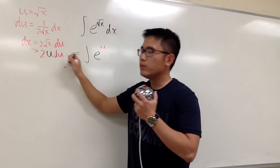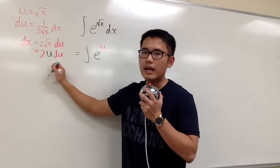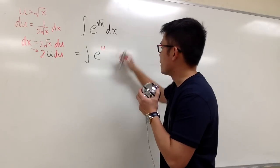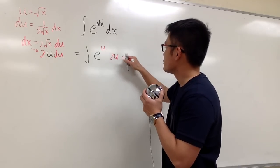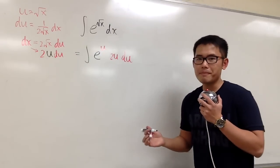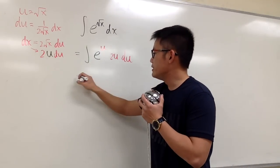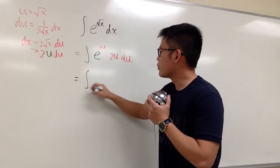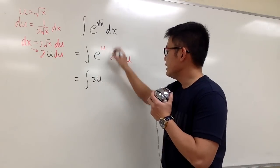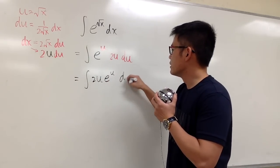dx is 2u du, and this is the expression I'm going to substitute for the dx right here, 2u du. Okay? And then let me just put this down nicely, this is the integral 2u e to the u du.